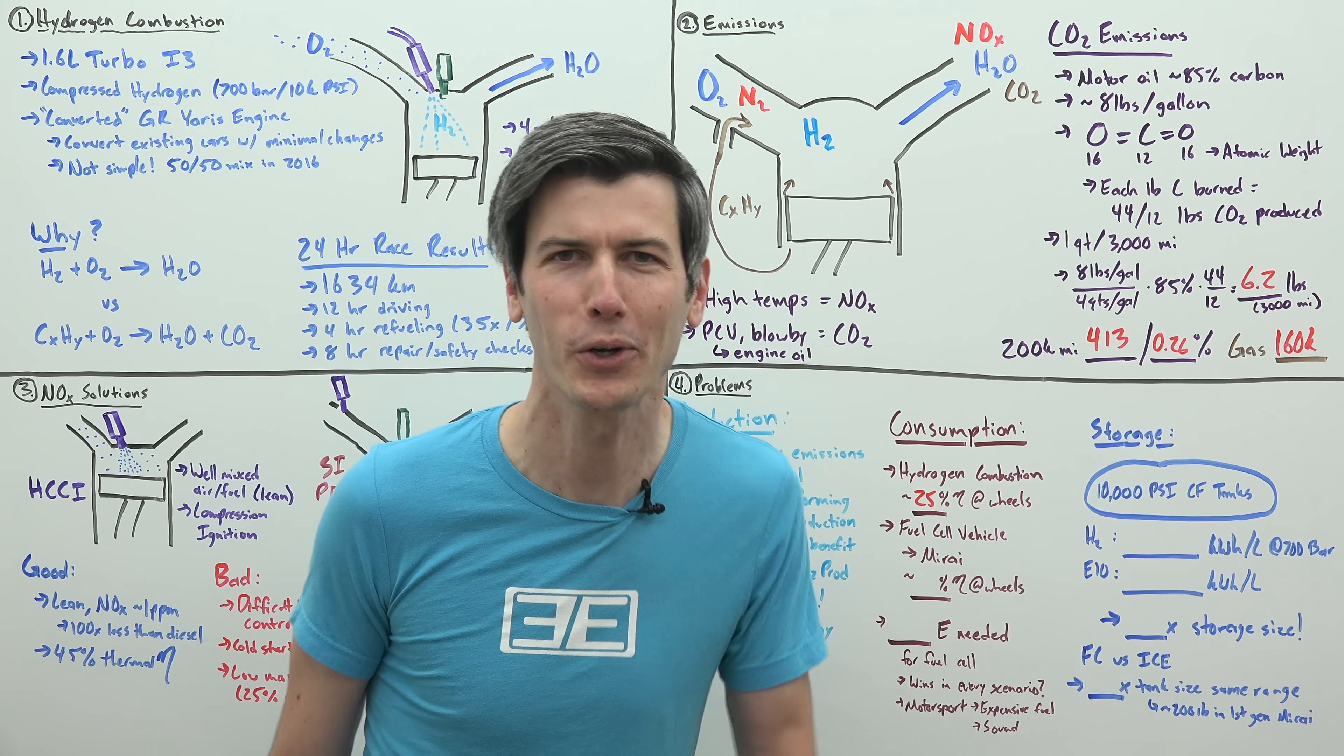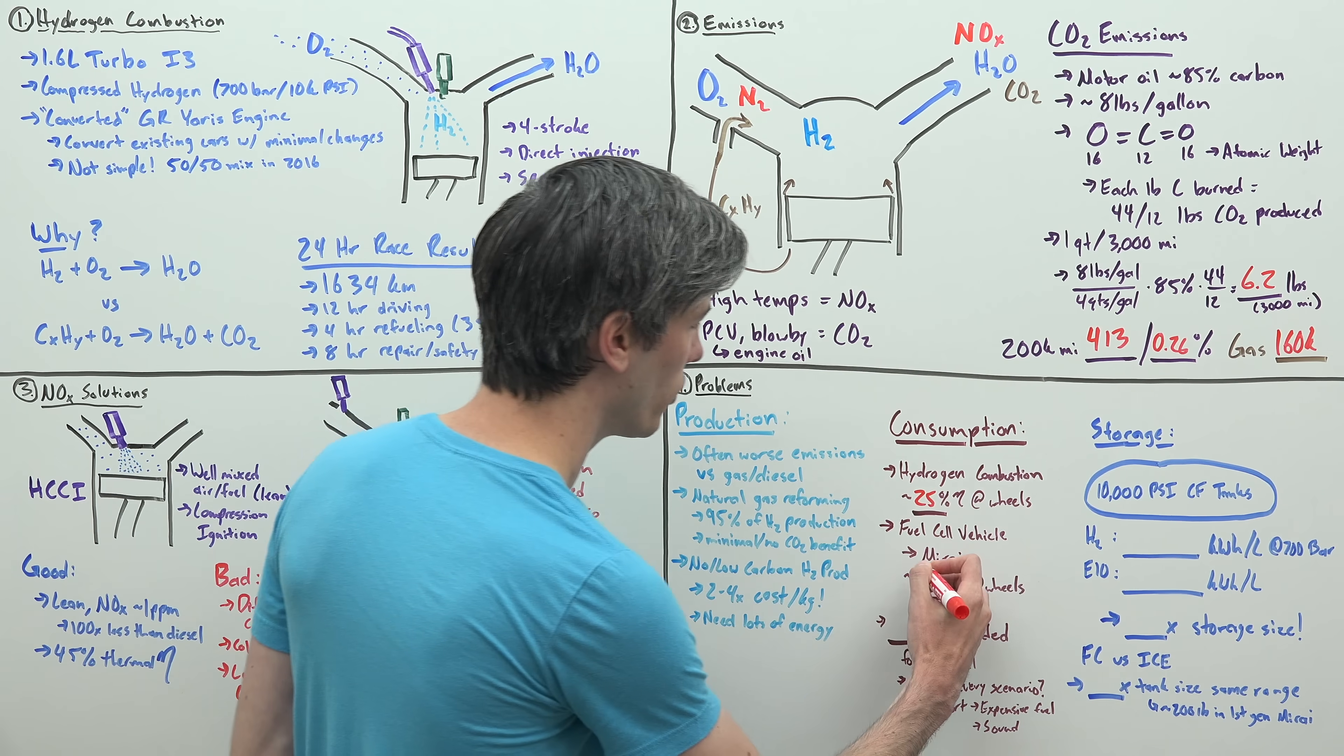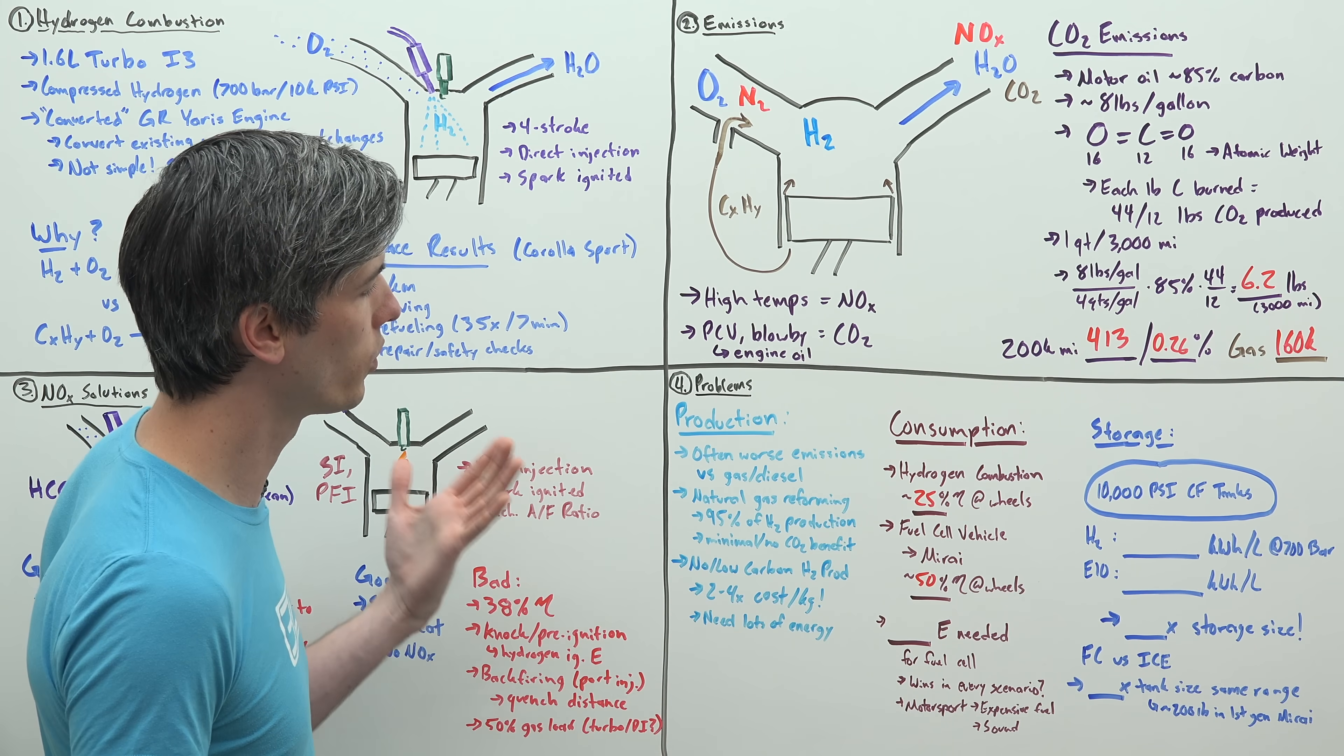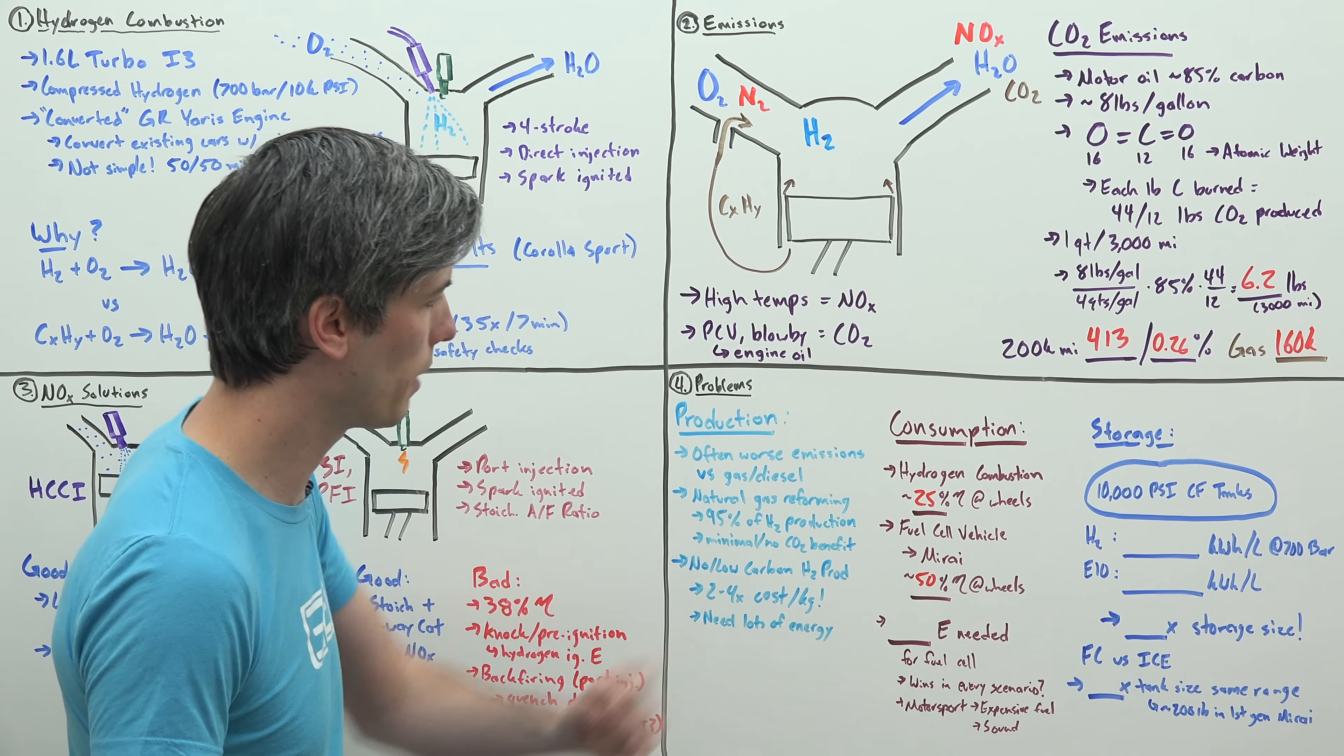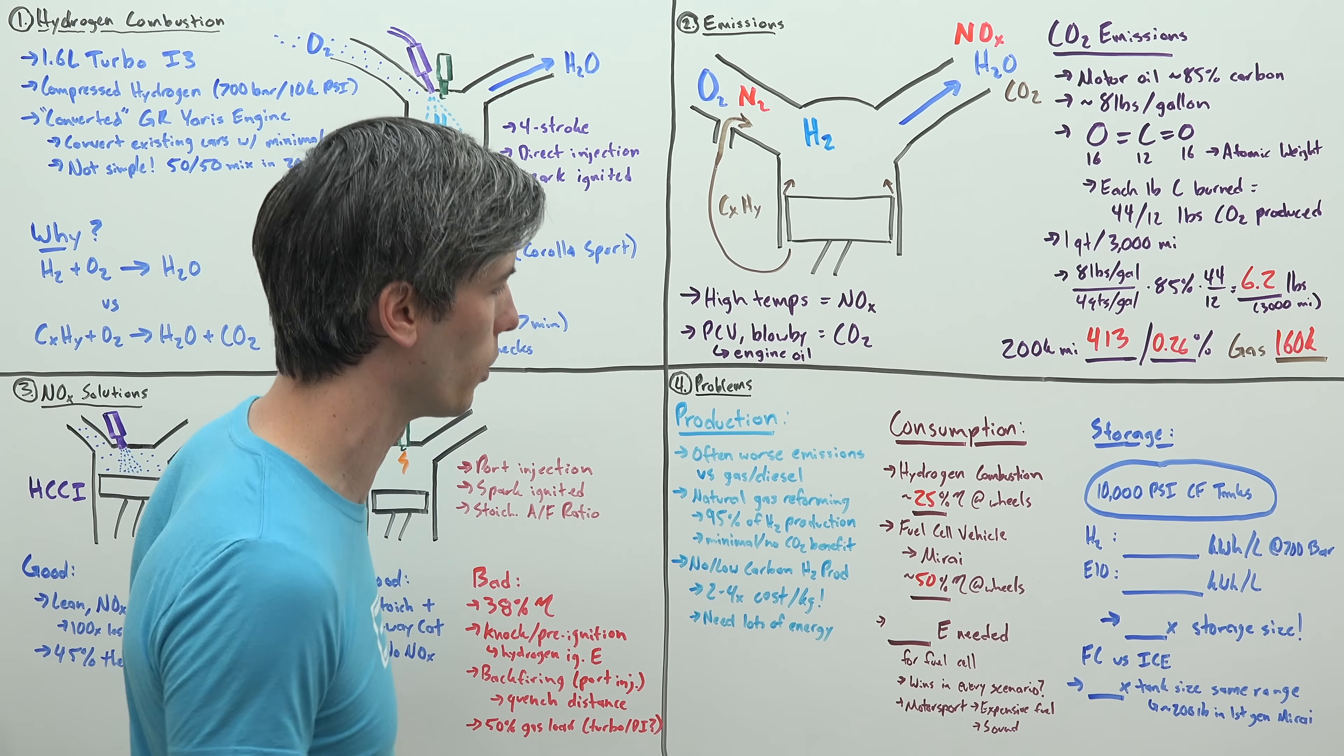And it just so happens that Toyota makes that vehicle, a Toyota Mirai. A fuel cell is a much more efficient way of moving a vehicle. In this case, you might have 50% efficiency at the wheels using a vehicle like the Toyota Mirai, which uses a fuel cell instead of hydrogen combustion. Both of them using hydrogen as the fuel source, but the Mirai is significantly more efficient. You're able to go twice as far on the same amount of fuel.